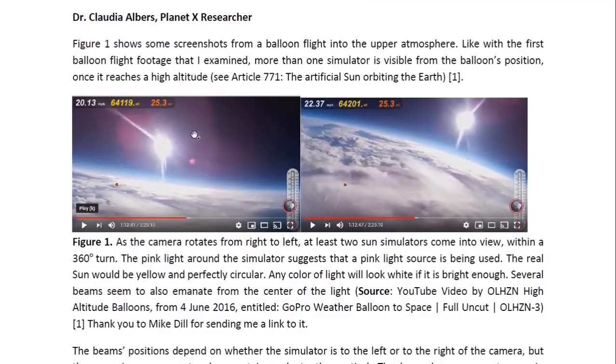Now, as you can see, there's this pink light around the object, around the light source. And this suggests that a magenta light source is being used. And of course, it looks white, because any light will look very bright when it's very bright, will look white. And it's only on the outside, when it's not as bright, that it will look its real color. In this case, magenta.